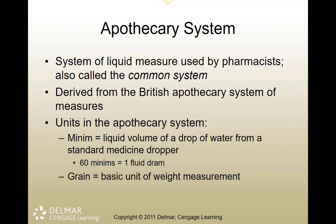The apothecary system measured both liquids and weights. The British apothecary system defines a drop of water as a minim, 60 minims equals one fluid dram, and eight drams — equivalent to 480 grains — equals one fluid ounce. A grain is based on the average weight of a grain of wheat. You can see where this gets confusing; it's not a smooth or easy system.